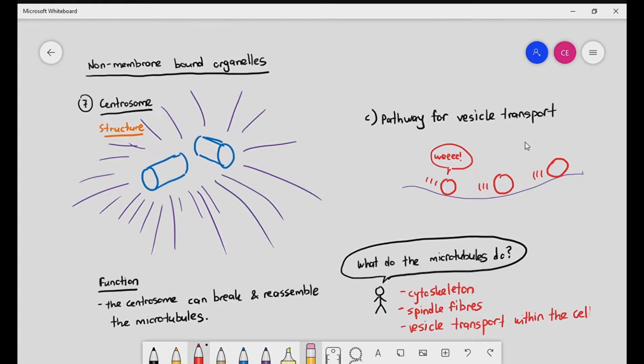If there were no microtubules within the cell, the cell would collapse because it would have no support system. It would not be able to undergo mitosis or meiosis because it would not have spindle fibers. And vesicles would not have been able to be transported within the cell because they use them as a pathway.